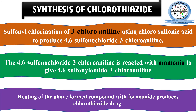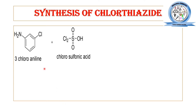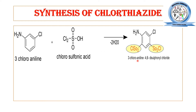Now let's check the reaction mechanism. This is the chemical structure of 3-chloroaniline — an organic molecule where the amino group is directly bonded with the benzene ring, substituted at the third position with chlorine. When it is reacted with chlorosulfonic acid, the resultant product is 3-chloroaniline 4,6-disulfonyl chloride. The chlorosulfonic acid causes sulfonyl chlorination at the fourth and sixth positions, with removal of water.